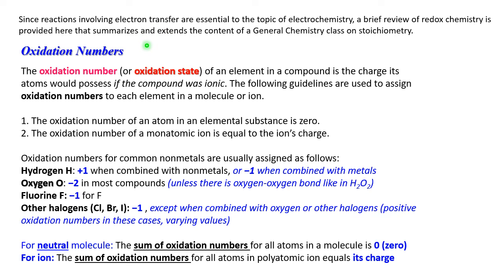All these materials for today's lecture you can find in chapter 4, reactions in aqueous solutions. We are just doing a brief review. So oxidation numbers or oxidation states, which is the same, of an element in a compound is the charge its atoms would possess if the compound was all ionic.